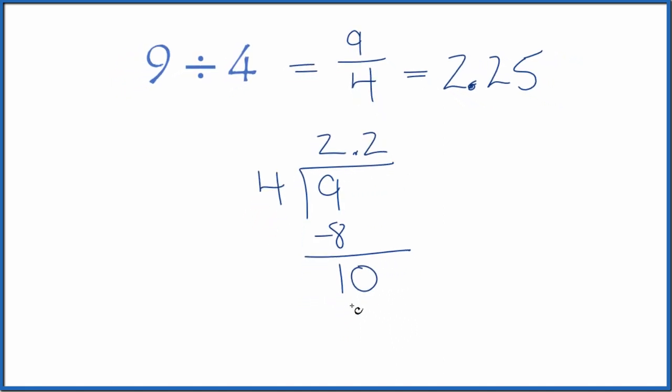Now 2 times 4 is 8. Subtract, we get 2. Call it 20. Move over 1.